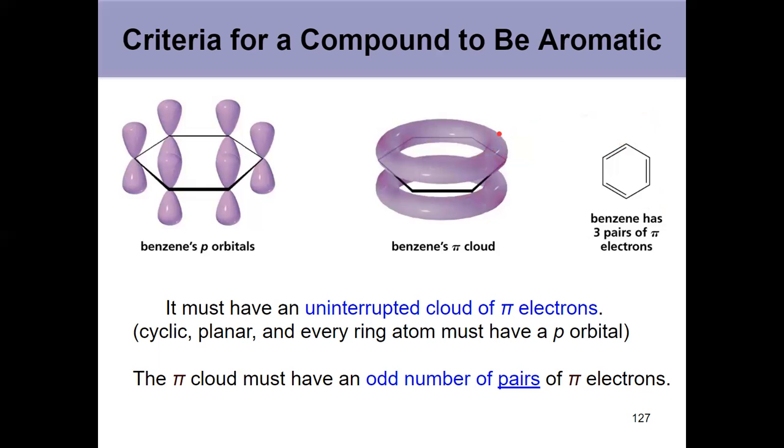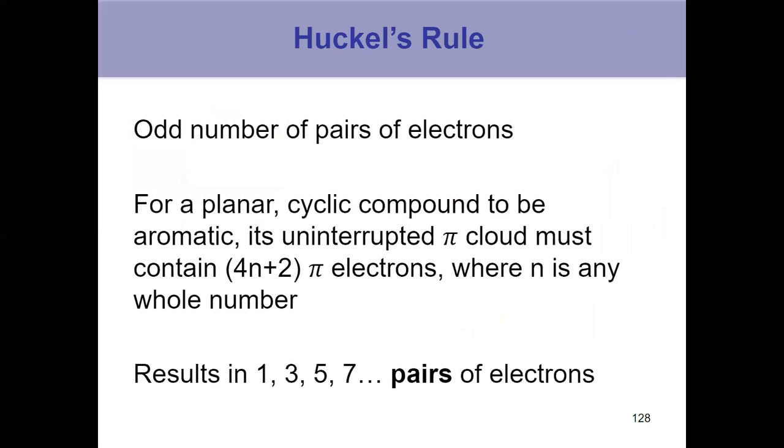And in addition to that, it has to have an odd number of pairs of pi electrons, which is a weird way for your textbook to describe it. An odd number of pairs of electrons. So like 1, 3, 5, 7 pairs of electrons.